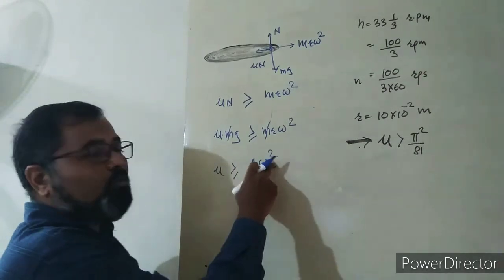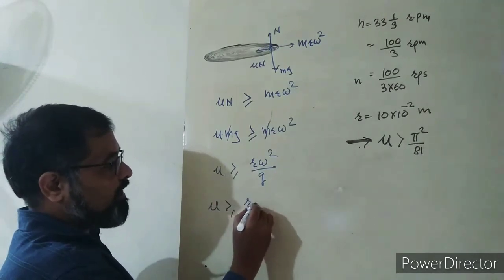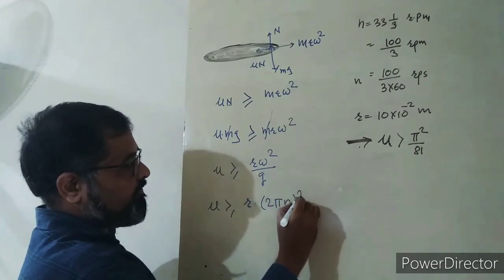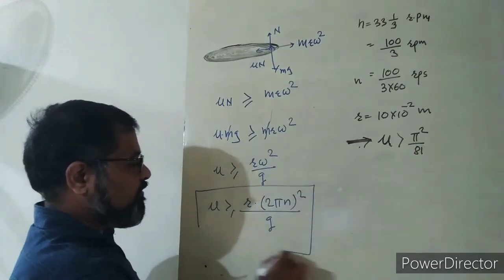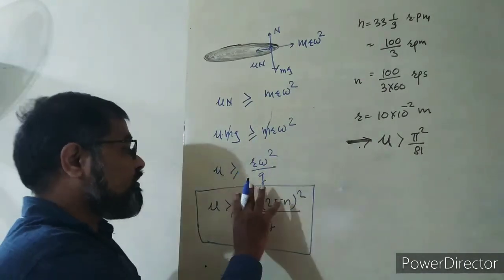ω = 2πn, so μ should be greater than or equal to r(2πn)²/g. This means μ ≥ r × (2π × frequency)²/g. Up to here, our concept is complete. Now only the calculation remains.